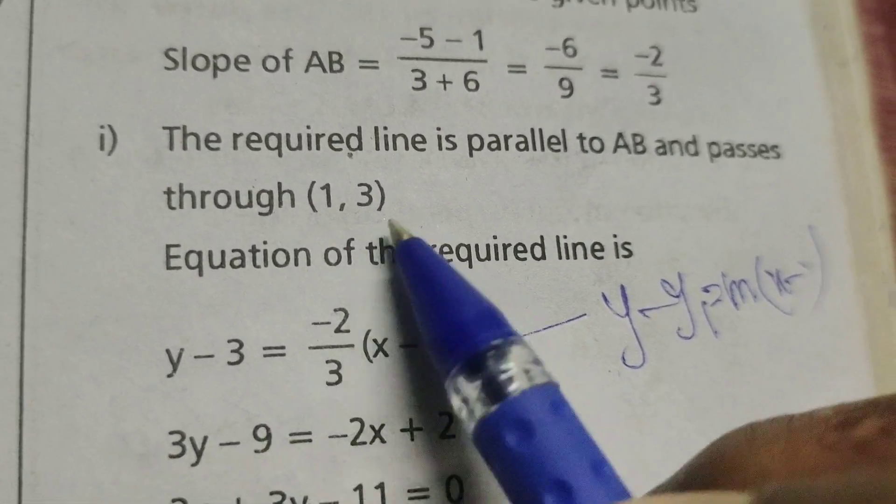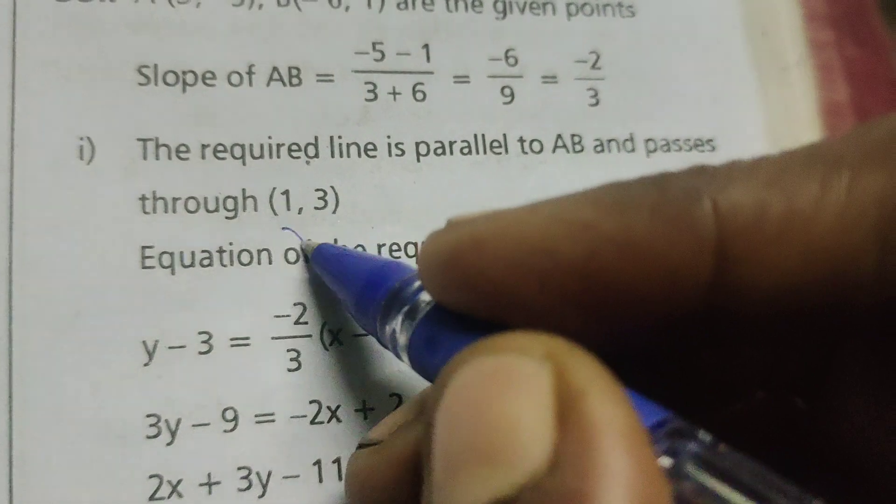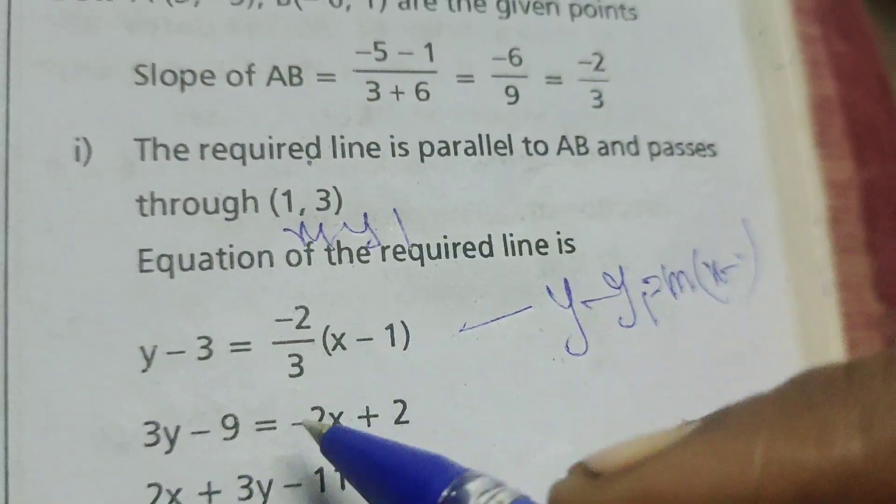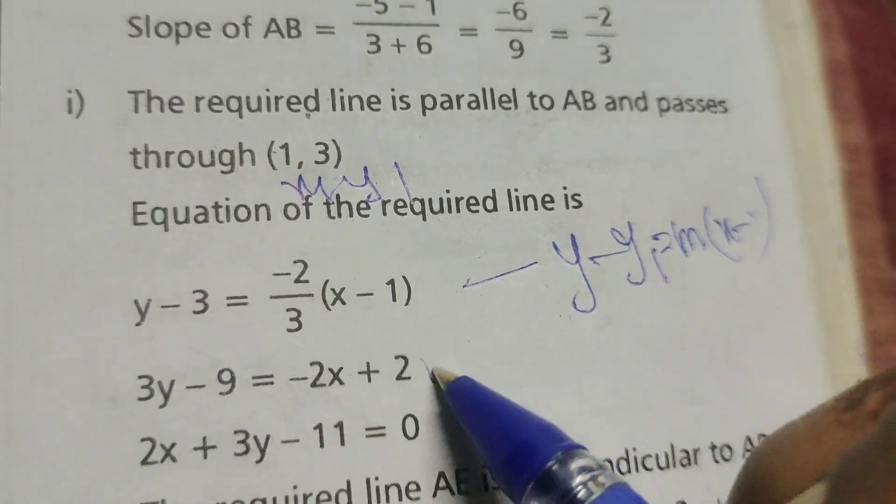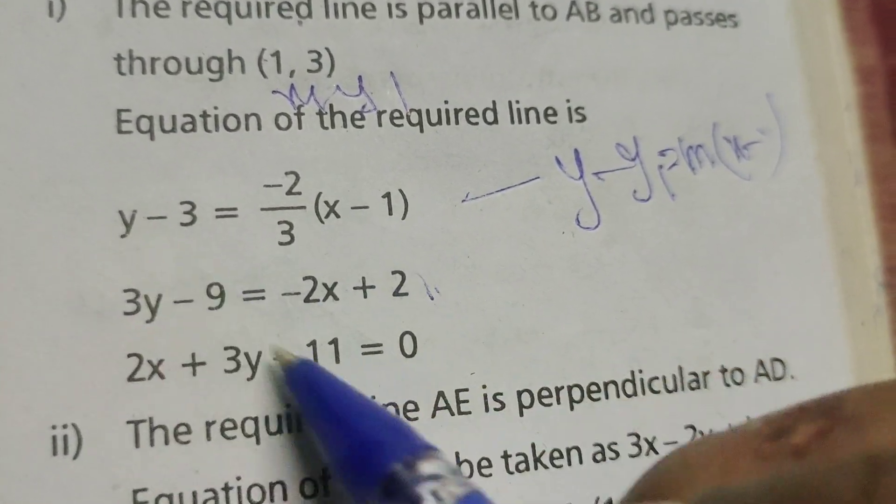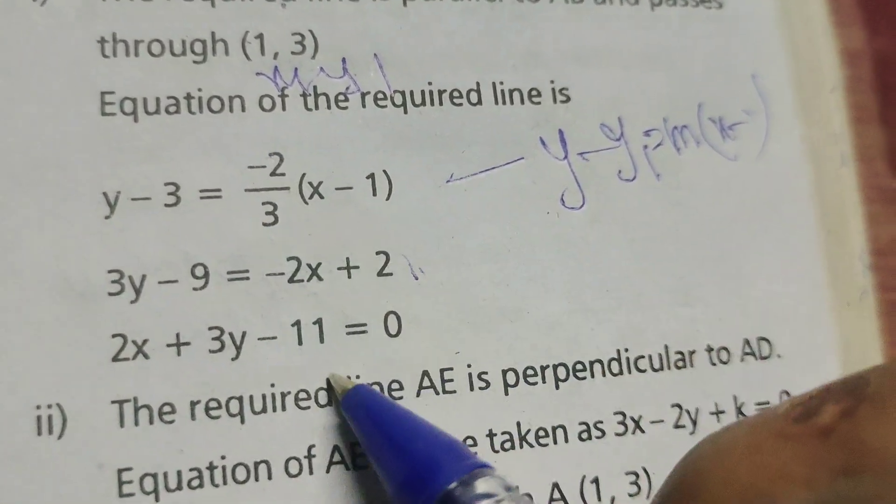Here y minus 3. This is x1, y1 minus 2y3. This is the slope. 3y minus x2 equals to -2x plus 2.